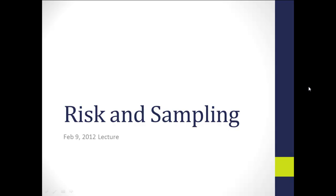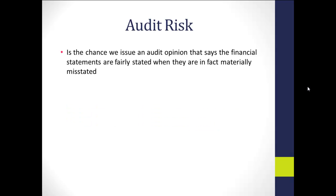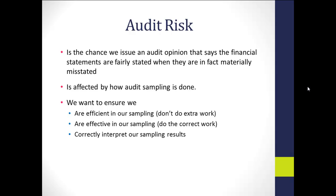This lecture addresses the relationship between risk and sampling. Audit risk is the chance we issue an audit opinion that says the financial statements are fairly stated, when in fact they are materially misstated. This is the ultimate wrong answer at the end of the audit, and it's affected by how audit sampling is done.